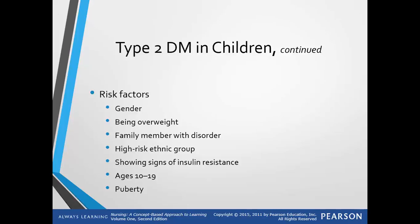Risk factors include gender (usually female), being overweight, having a family member with the disorder, being a member of a high-risk ethnic group, showing signs of insulin resistance, being ages 10 to 19, and experiencing puberty.